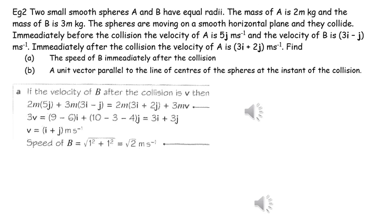In this question we know the velocities of both objects before and after the collision, so we can just apply normal conservation of momentum in vector notation, and then once we've got the velocity vector we can work out its magnitude to find the speed of b.